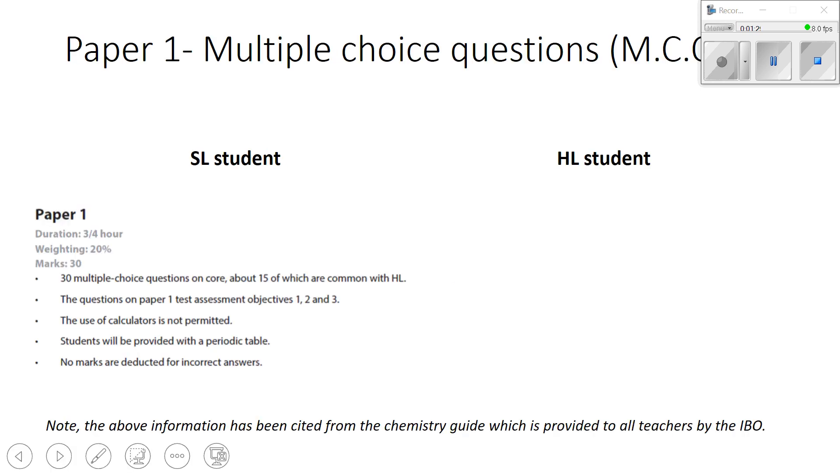So if we look at the breakdown for paper one here, whether you're higher level or standard level. This information has been cited from the chemistry guide, which is provided to all teachers from the International Baccalaureate Organization. So if you're a standard level student, paper one is three quarters of an hour. So 45 minutes and the weighting for paper one is 20%. If you're a standard level student with 30 marks going for 30 multiple choice questions. So each multiple choice question is worth one mark. And it's important to remember that. So whether it's a particularly difficult question on stoichiometry or a very straightforward question on equilibrium, they're both going to yield that one mark for you.